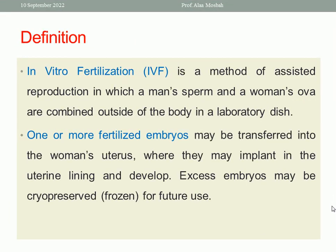The definition of IVF: it is a method of assisted reproduction in which the man's sperm and woman's oocyte are combined outside the body in a laboratory dish. One or more fertilized embryos may be transferred into the woman's uterus, where they may implant in the uterine lining and develop. Excess embryos can be cryopreserved for future use. If this cycle is unsuccessful, the trial can be repeated in another cycle without stimulation, as embryos are already frozen in liquid nitrogen.